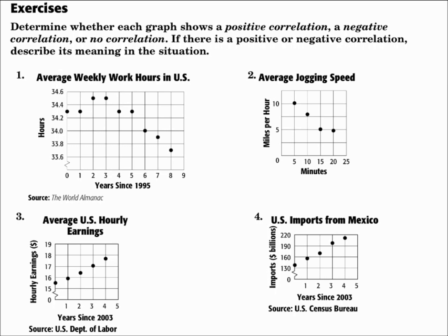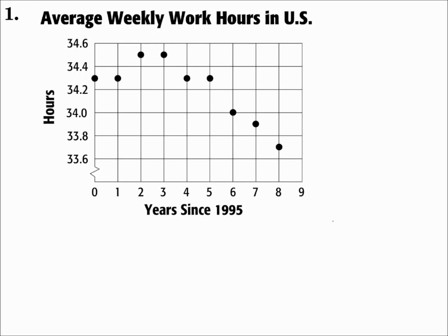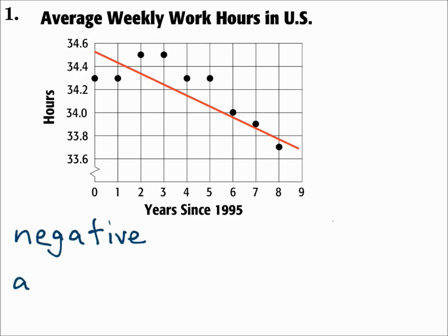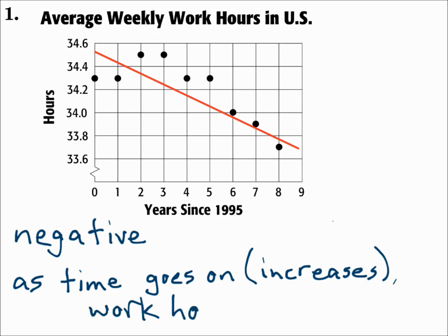Determine whether each graph shows a positive correlation, a negative correlation, or no correlation. If there is a positive or negative correlation, describe its meaning in the situation. Number one: average weekly work hours in the U.S. This is comparing the years since 1995 and the hours that people work. The points tend to follow a line that goes downward left to right. As x increases, y decreases, so that's a negative correlation. As time increases, work hours decrease.